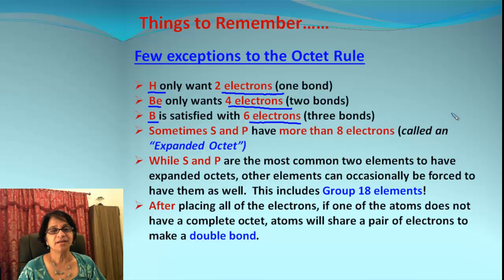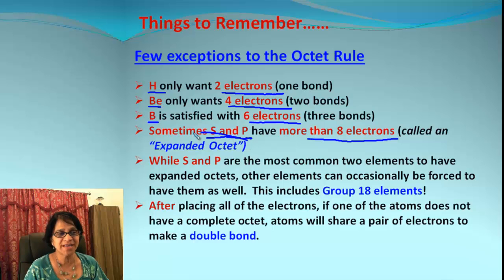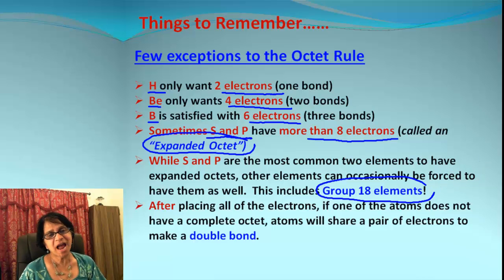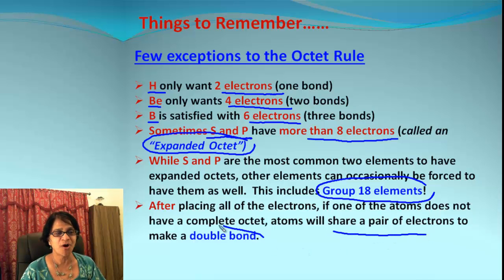Even though the octet rule says we have to have eight electrons, sometimes S and P orbitals may have more than eight electrons — we call this expanded octet. Group 18 elements may also be included in expanded octet sometimes. And sometimes when you put electrons around the elements, some elements may not have eight electrons — they might still be hungry for more. In that case, electrons are shared and the shared pair forms a double bond or sometimes even a triple bond.